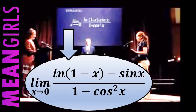The limit as x approaches 0 of the natural log of 1 minus x minus the sine of x all over 1 minus the cosine squared of x.